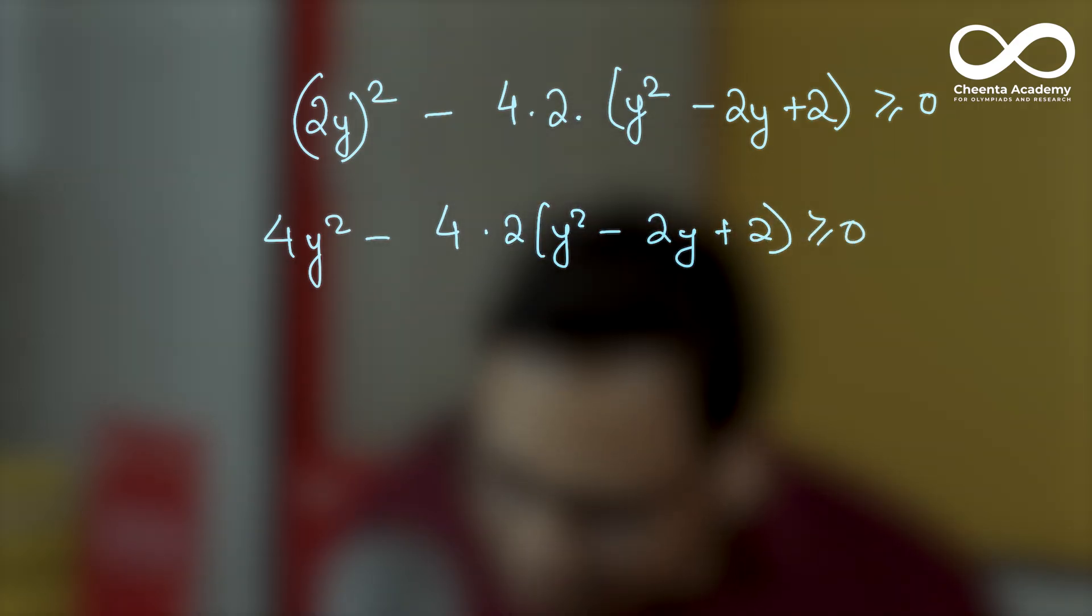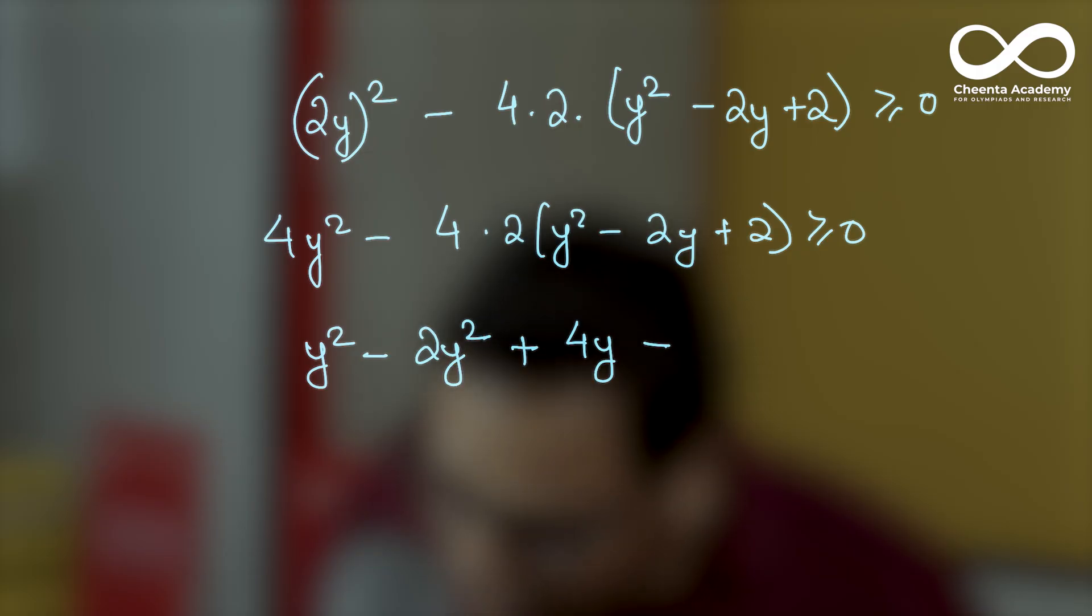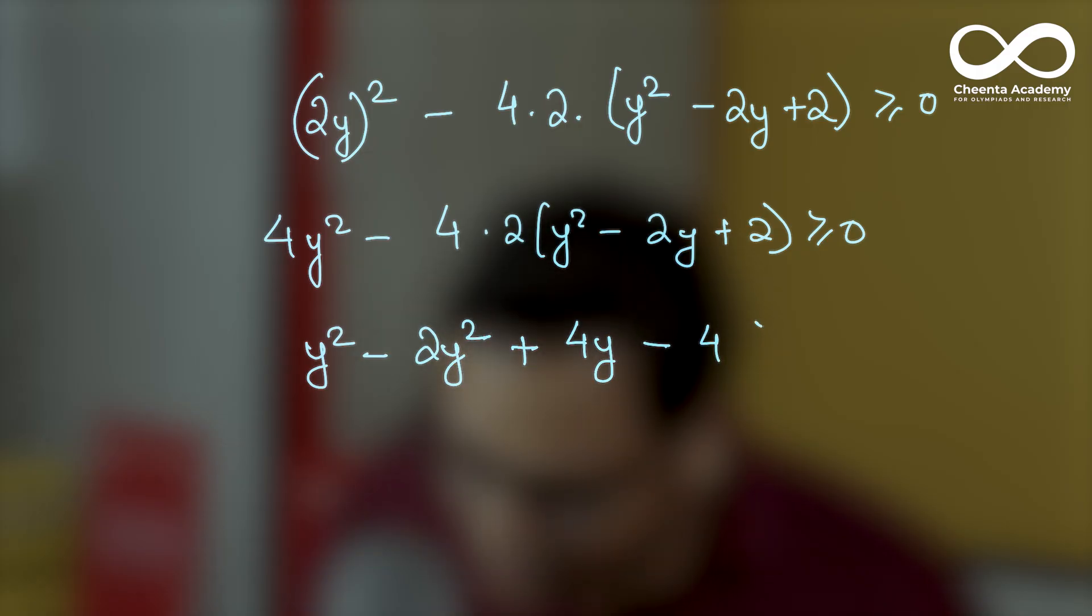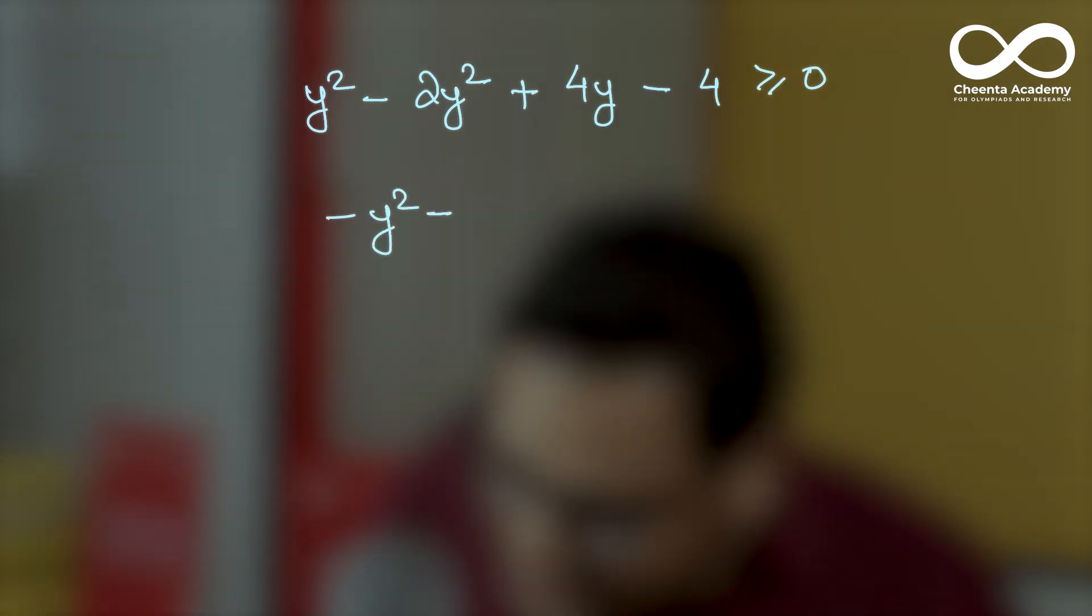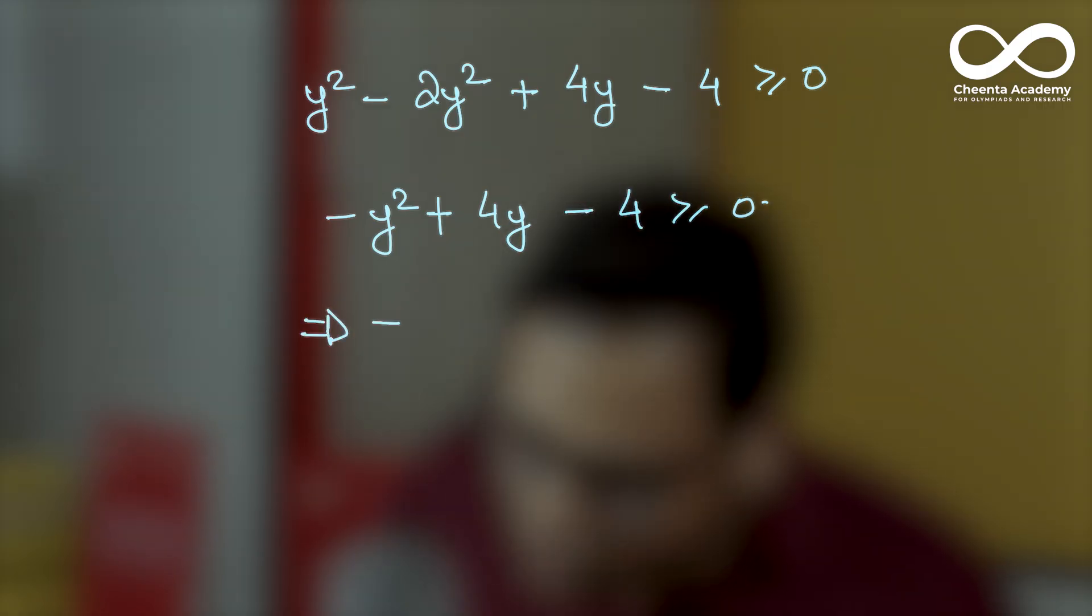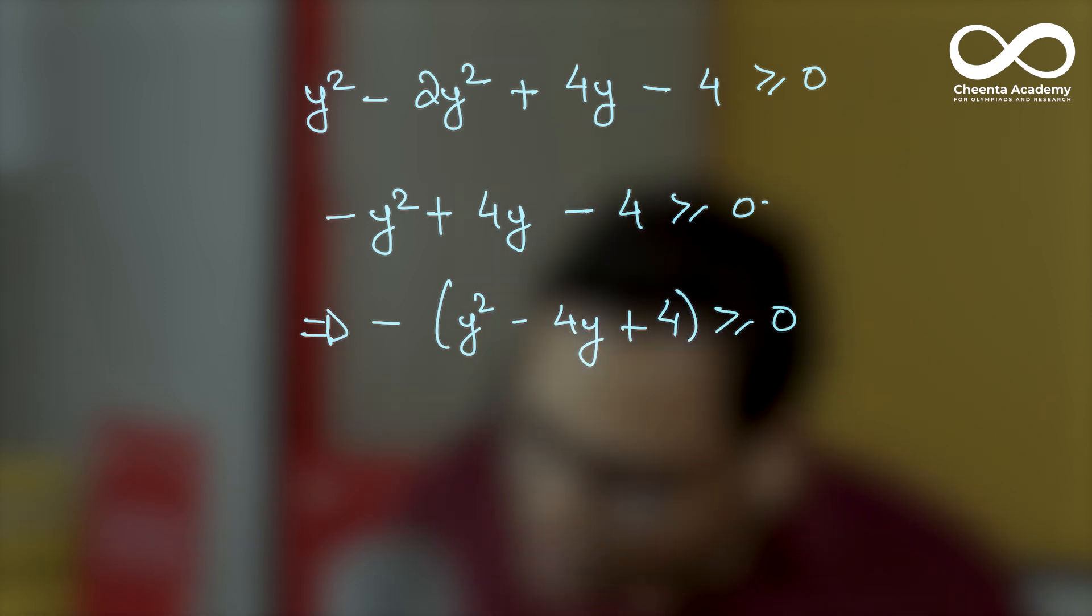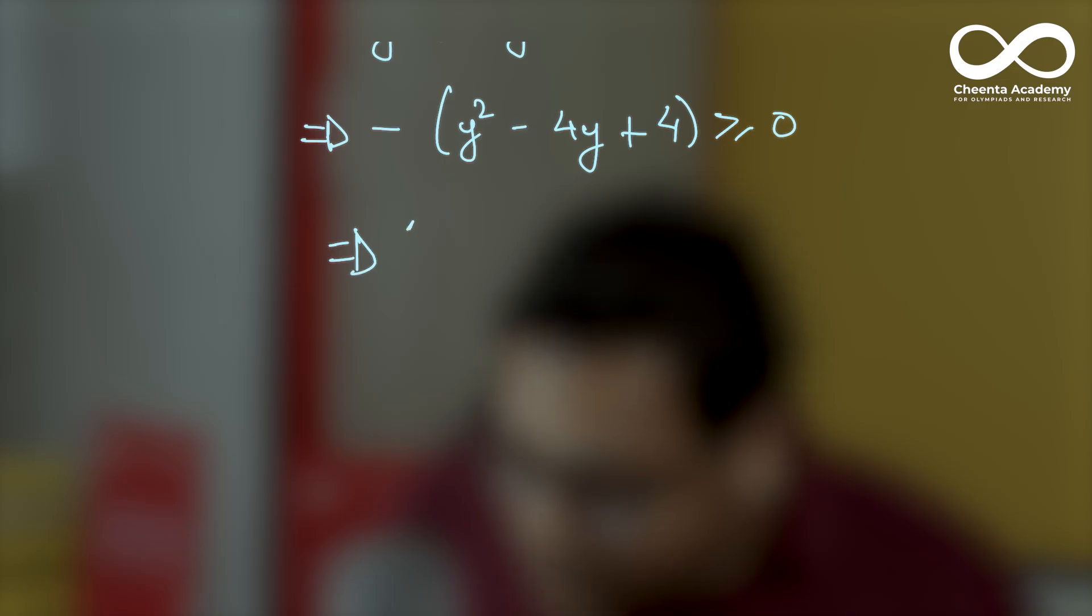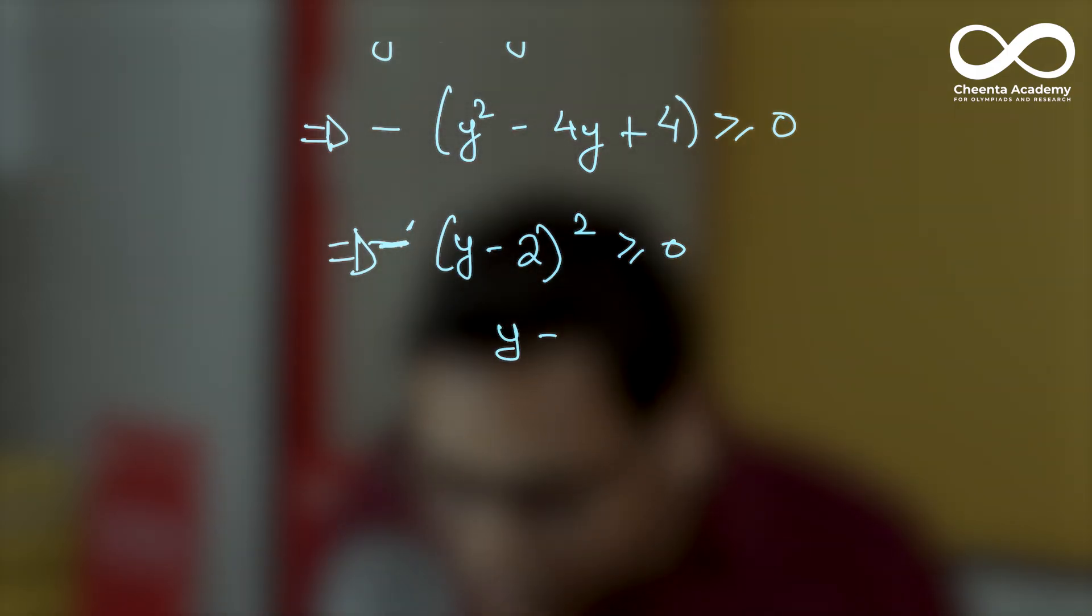So y squared minus 2y squared plus 4y minus 4 is greater than or equal to 0. Now I can simplify further. y squared minus y squared plus 4y minus 4 is greater than or equal to 0. Which means if I take a negative sign common, it's y squared minus 4y plus 4 greater than or equal to 0. Which essentially means y minus 2 whole squared is greater than or equal to 0. Now this can only be possible if y is equal to 2.